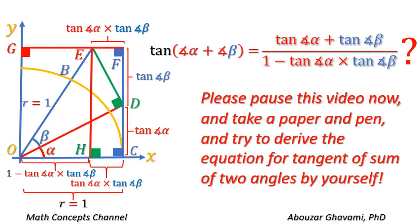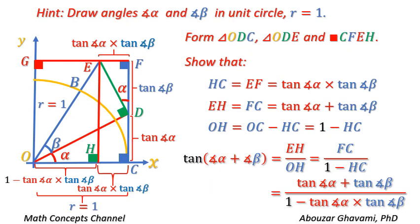Please pause this video now and take a paper and pen and try to derive the equation for tangent of sum of two angles by yourself. As a hint, draw angles alpha and beta in unit circle with radius R equal to 1.